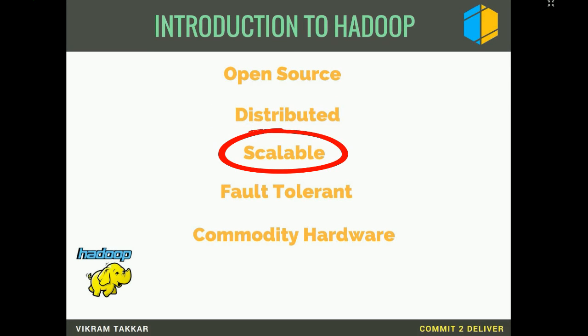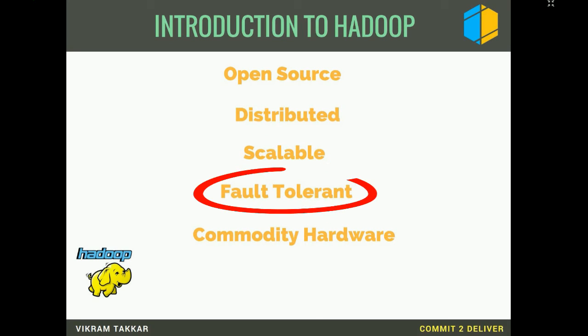Hadoop provides a highly scalable model in which data can be processed by spreading it over multiple machines, which can be increased or decreased as per the enterprise requirement. You can increase the data nodes and the data will be split and processed in parallel. Hadoop also uses commodity hardware to store files.